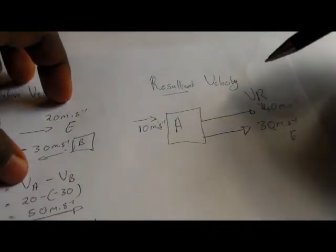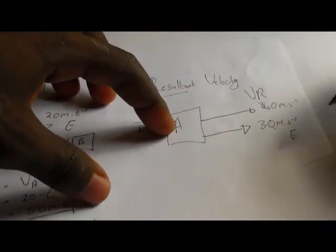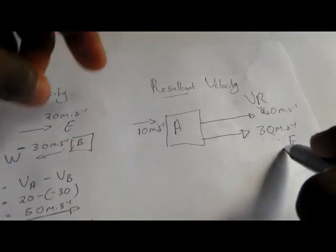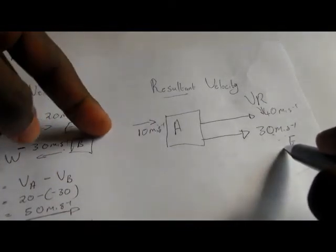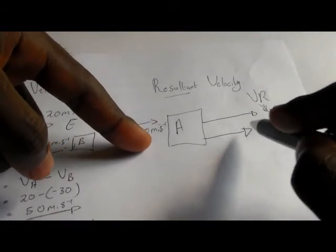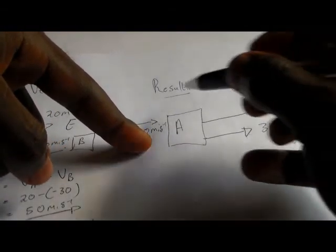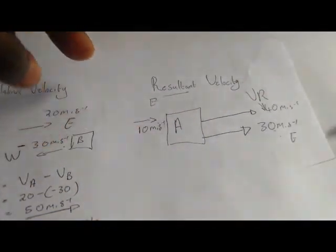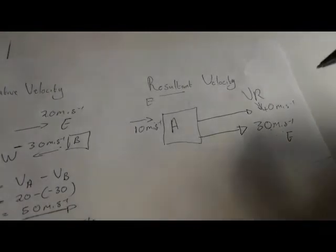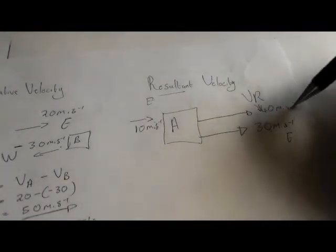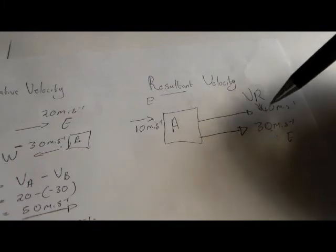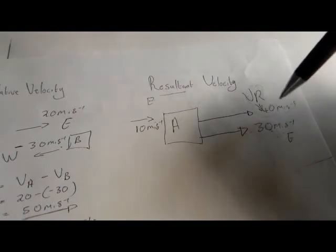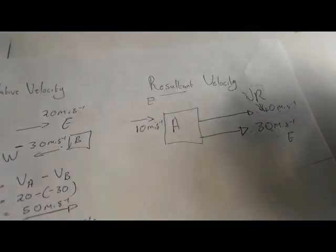If body A is moving at 30 meters per second directly east and there is an external force pushing this body directly east as well, the resultant velocity will be 40 meters per second. This is the velocity that will replace these two velocities and still do the same amount of work.